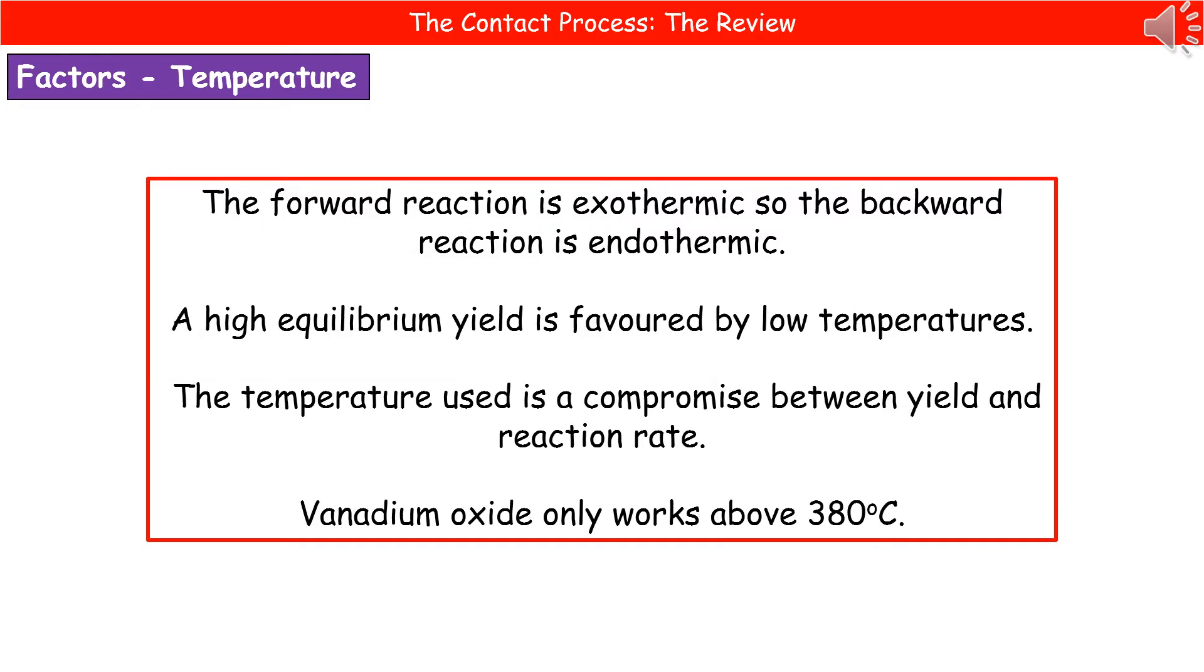In terms of temperature, as we've seen on the actual equation, the enthalpy change was negative, which tells us that the forward reaction is exothermic. If the forward reaction is exothermic, the backward reaction is endothermic. A high equilibrium yield is favored by low temperatures. But we're going to end up with a compromise here because we're not just going to pick the lowest temperature possible because then the rate of reaction would be incredibly low. So we pick a compromise temperature to give us a good yield but also a good reaction rate.